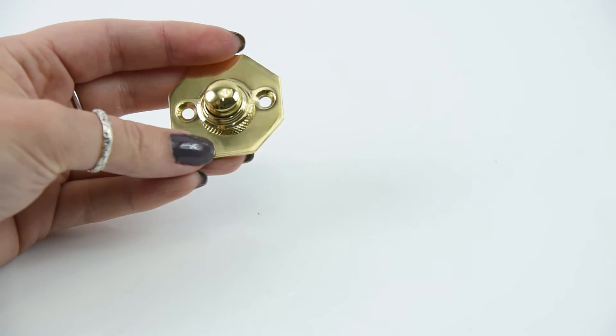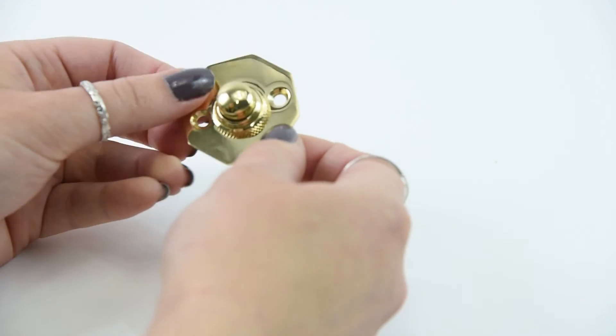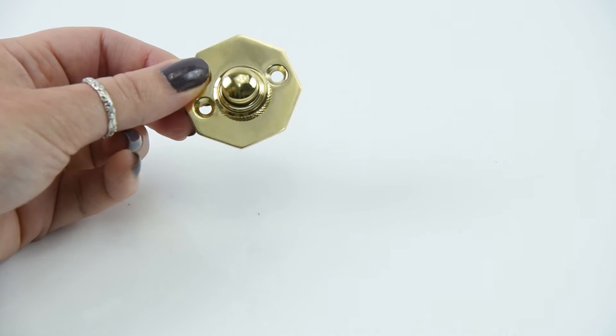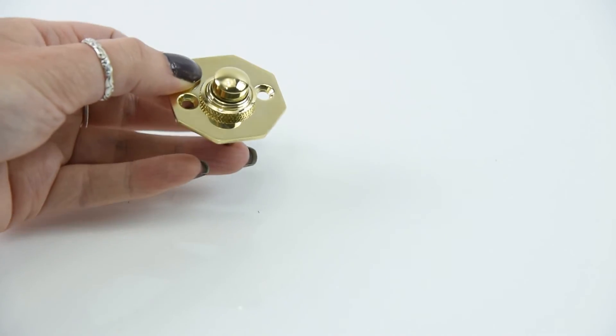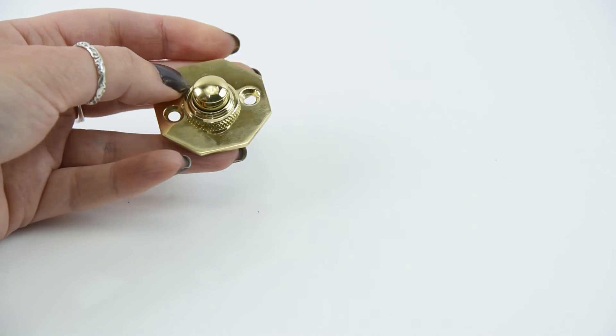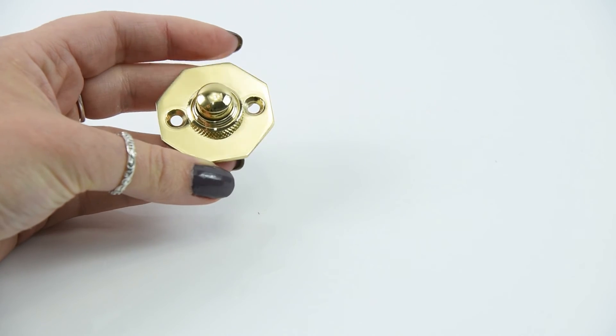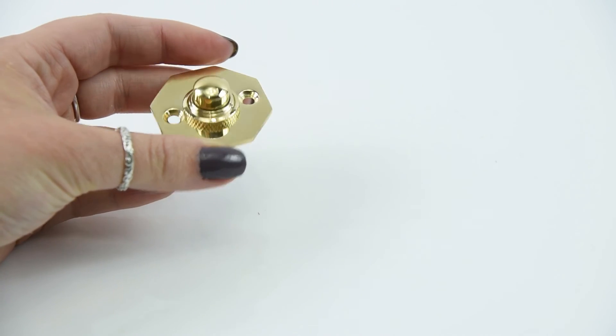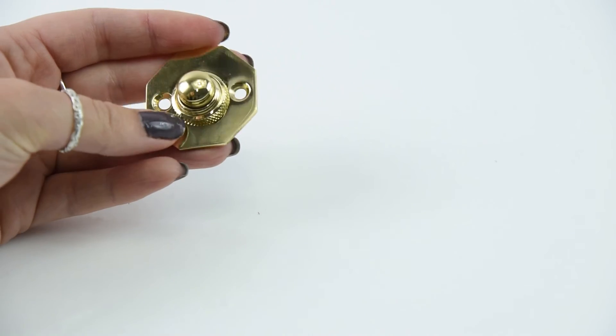It comes with your fixings as well so you've got your two fixing centres. The fixings come matching the finish of your choice. So because this one's in brass you're going to get the brass fixings. If you were to go for chrome or bronze you'd get chrome or bronze fixings. It's a fantastic thing that Croft do provide.